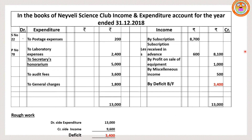Debit side total (expenditure): 13,000. Credit side — add three items: 8,100 plus 1,000 plus 500 gives income side total of 9,600. Expenditure side is higher than income side — so we met a deficit. The difference between expenditure and income is 3,400. Write it as 'By deficit — balancing figure'. Next step is to prepare the balance sheet.